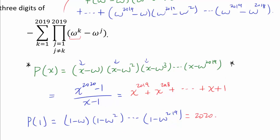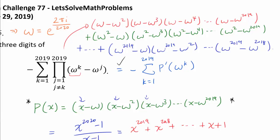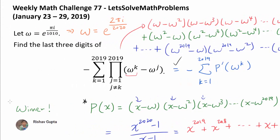How do we proceed from p of x to the expression? Here is a crucial point: I assert that the original expression equals negative summation from k equals 1 to 2019 of p prime — the derivative of p — evaluated at omega to the k. I highly encourage you to pause the video and ponder why these expressions are the same. Once this makes sense, we are 75% of the way there. Before we establish the equality, let us recognize Rishabh Gupta, the very first person to provide a correct solution to this problem last week.